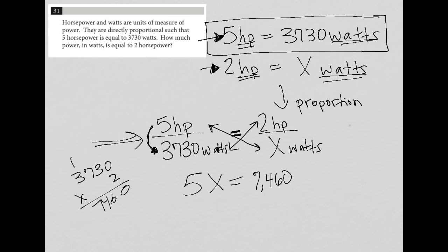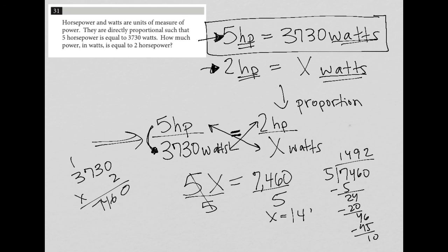And then what we do here is just solve for x. So we're dividing by 5. So 5 into 7,460, so that's 1, 5, 2, 4, 4, 4, 6, 9, and 2. So x is equal to 1,492. And remember that was watts for the unit. So how much power in watts, so we know that we're in the right unit. So the answer is 1,492.